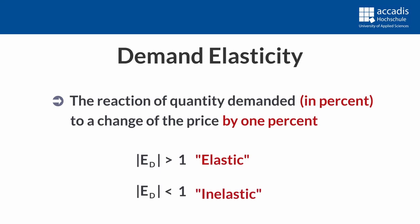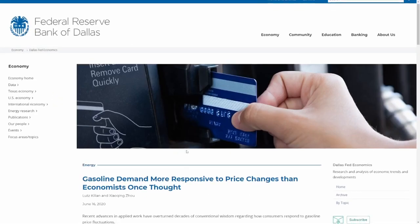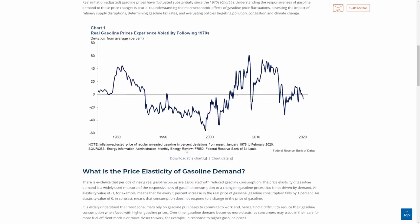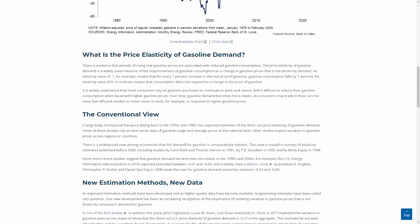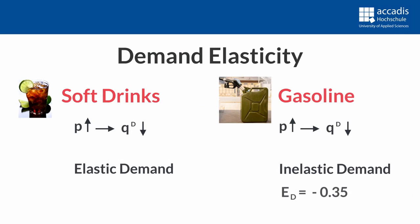Knowing this demand elasticity would of course be extremely valuable for any company acting on that market. However, it's very hard to get a real estimate of it, since you would need broad-based price changes as an experiment just to measure the real-life reaction of demanders — not something companies are likely to do. Nonetheless, economists try to calculate different elasticities. For example, for gasoline in the US, several studies estimate demand elasticity to be around minus 0.35, while for soft drinks the estimates lie around minus 1.6.